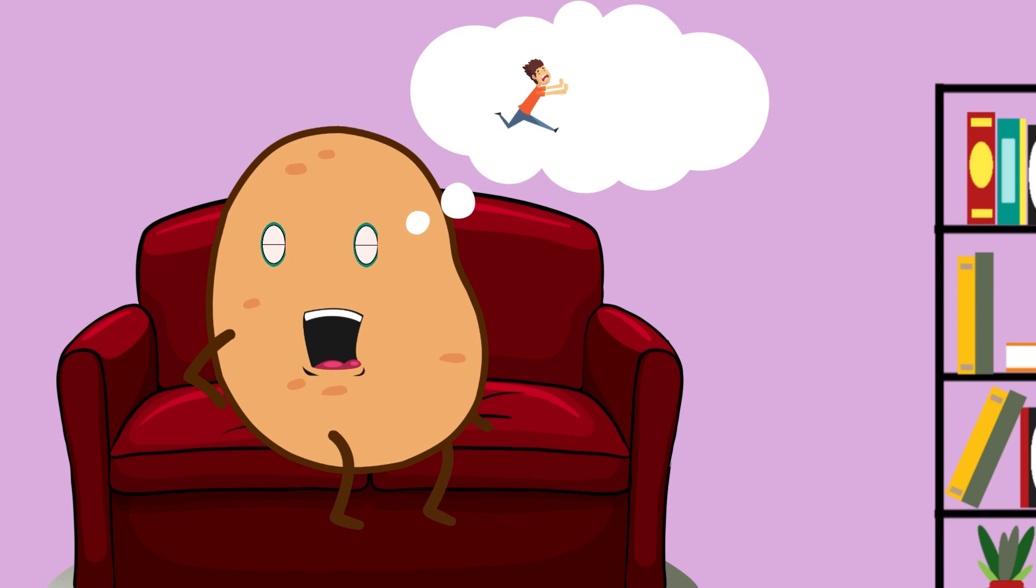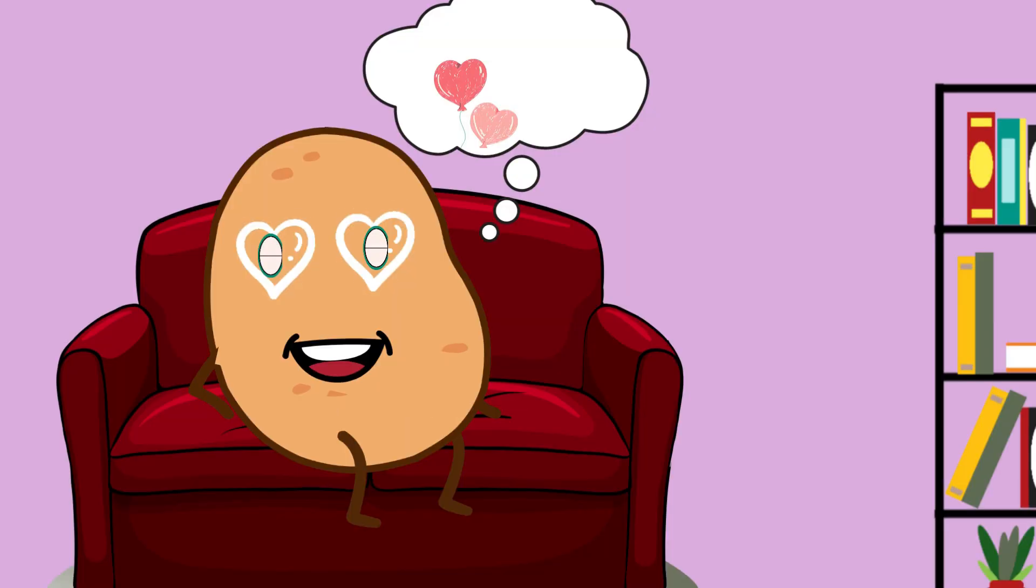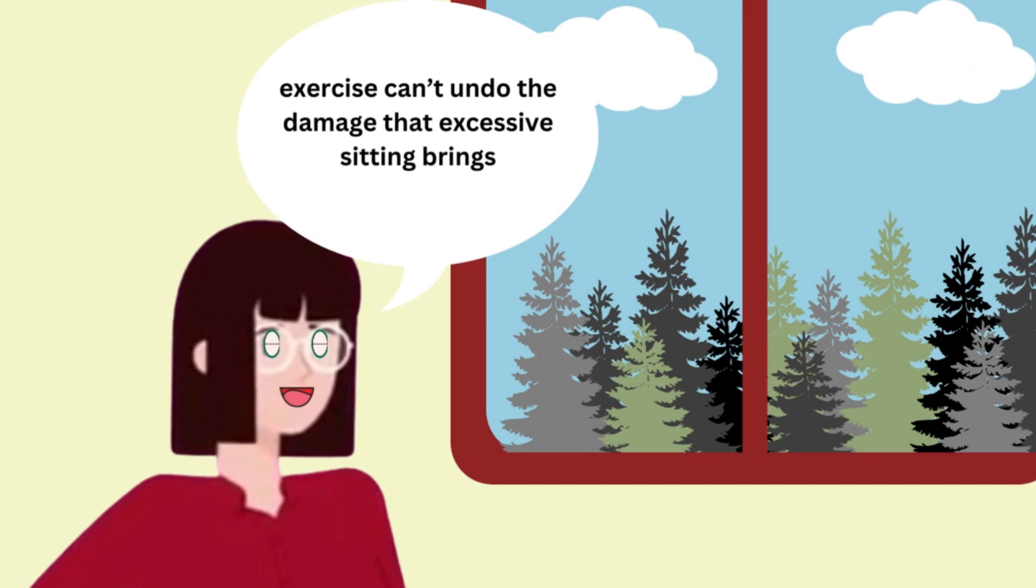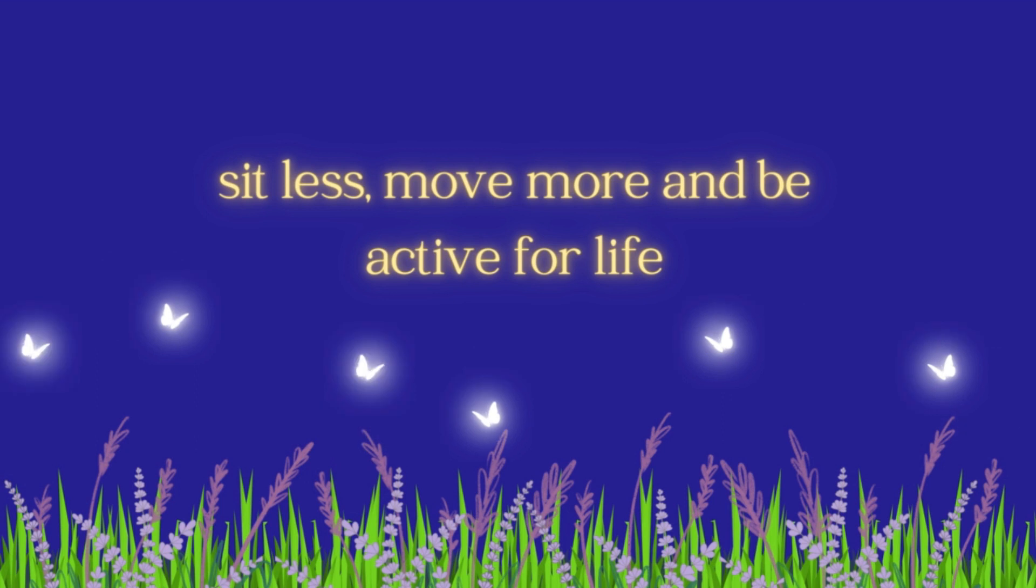A lifestyle with a lot of sitting and lying down with very little to no exercise can reduce the birth of new neurons, reduce plasticity and increase inflammation. Interestingly, exercise cannot undo the damage that excessive sitting brings. So, like our parents tell us, sit less, move more, and be active for life.